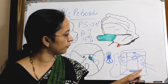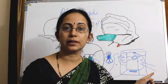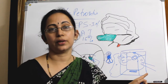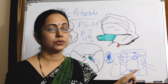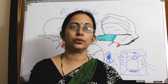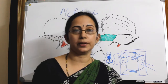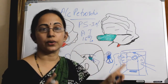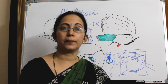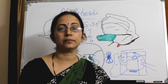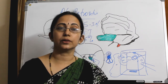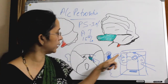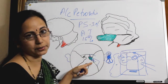Another important structure in the anteroinferior route is the internal carotid artery. So the anteroinferior tract passes from the hypotympanum and the middle ear, goes around the Eustachian tube and the cochlea, and reaches the petrous apex.